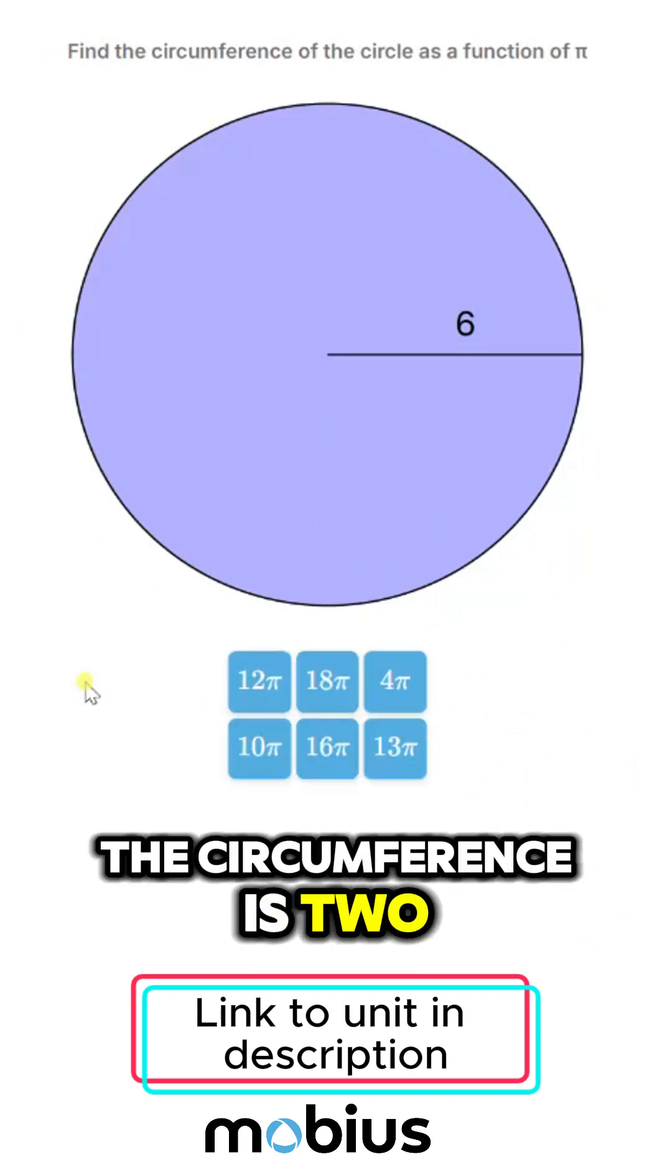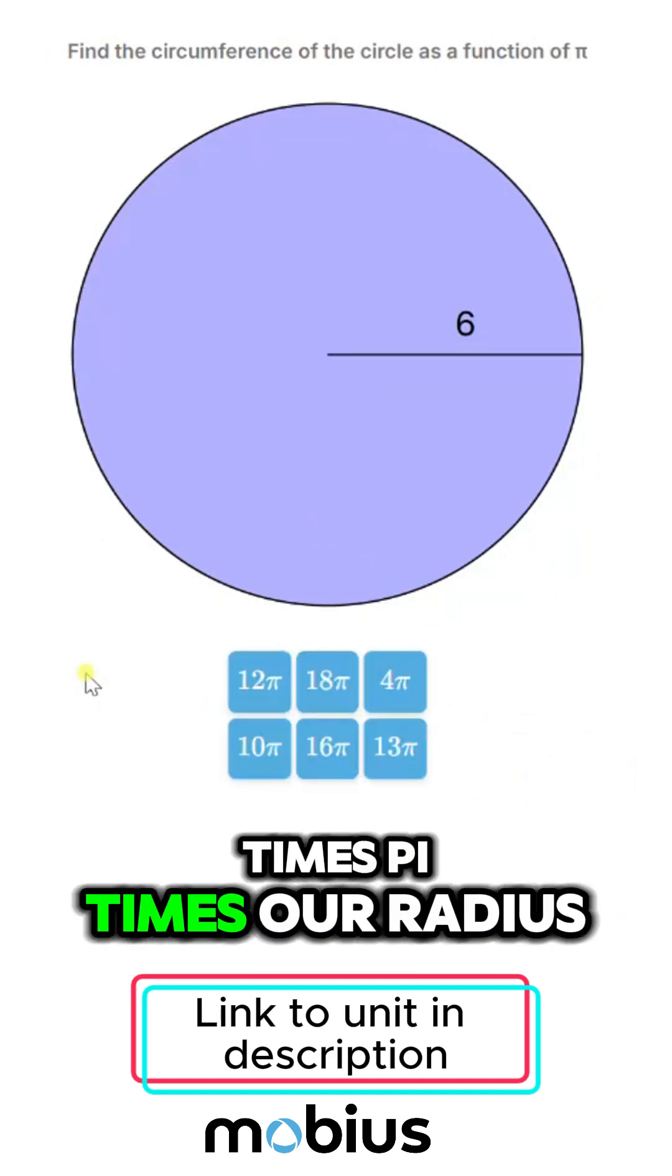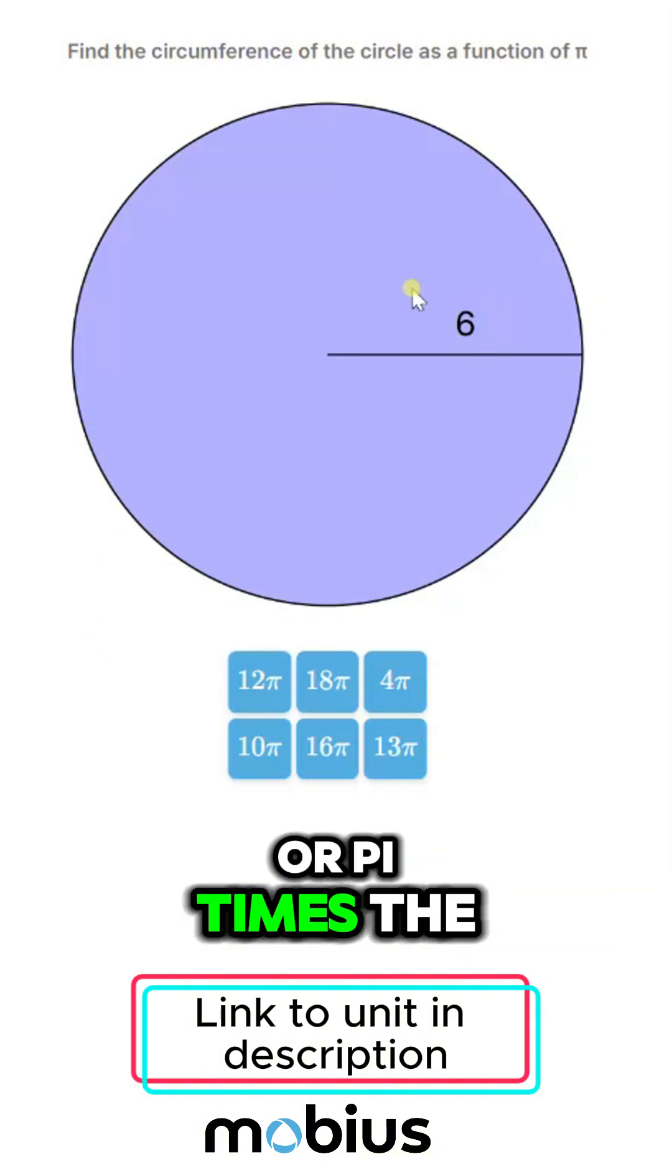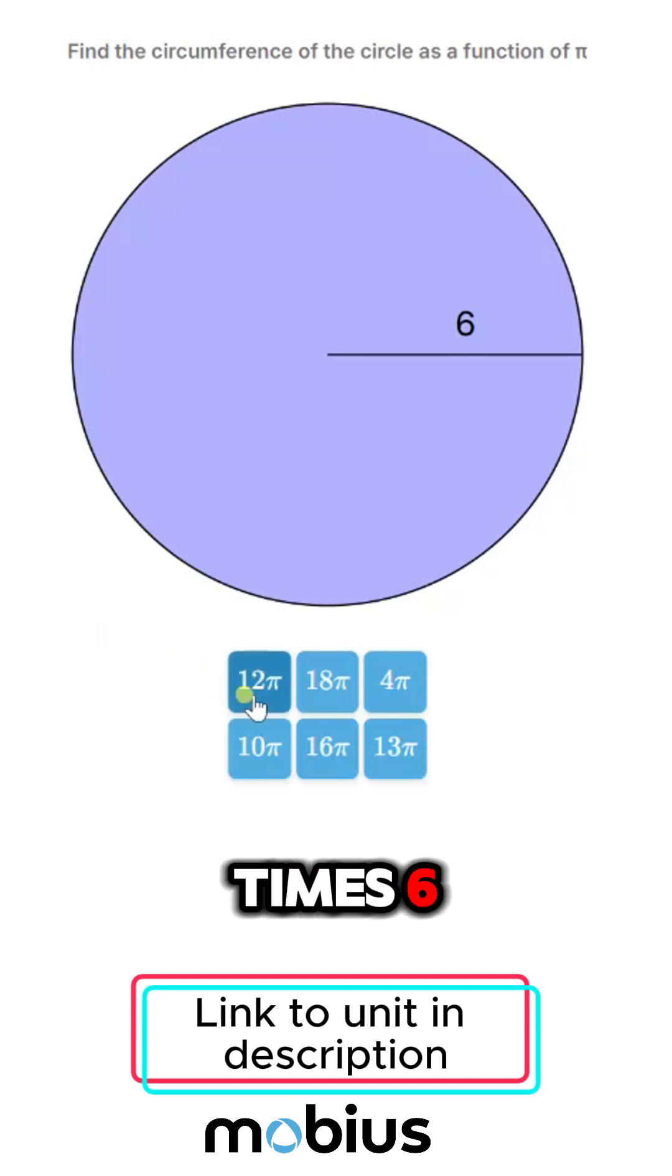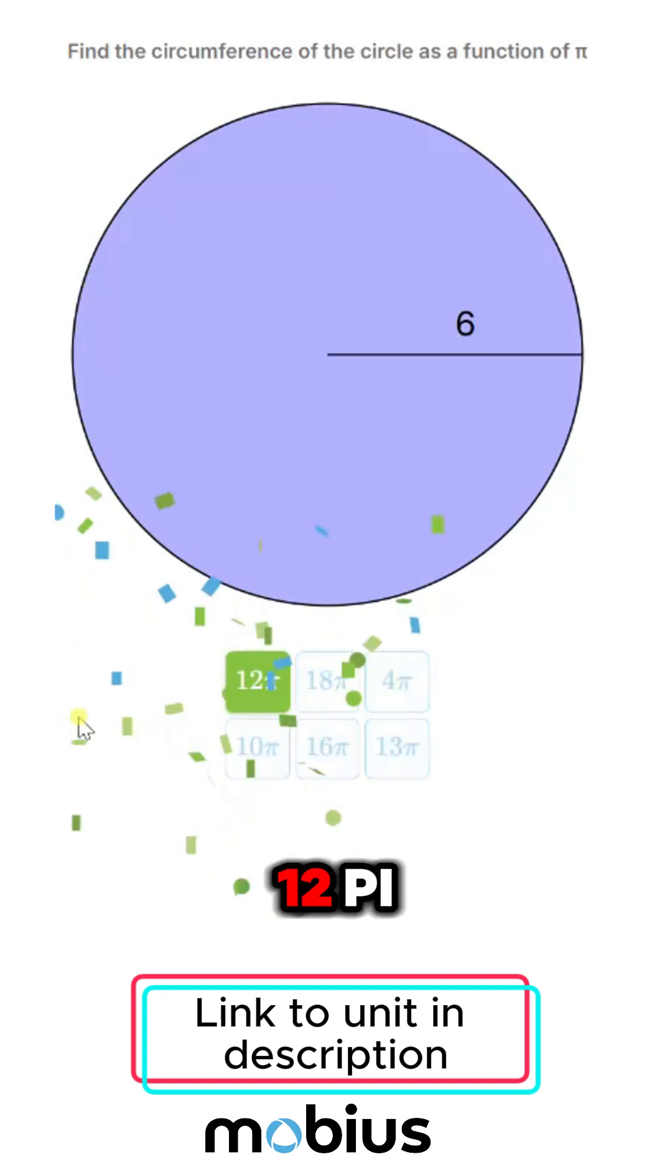The circumference is 2 times pi times our radius, or pi times the diameter, and our radius is 6. So that's 2 times pi times 6, or 12 pi.